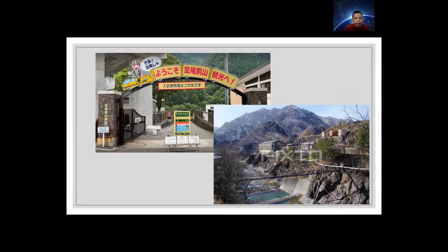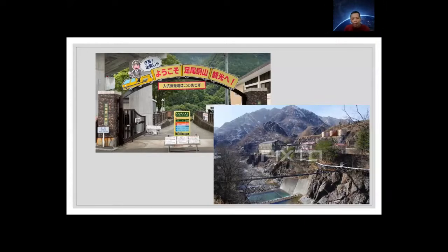The Ashio copper mine mineral pollution incident was a pollution incident in Japan originating from the early Meiji period in the late 19th century, in the Watarase River area of Tochigi and Gunma prefectures. It was noted that smoke due to the development of the copper mine polluted the air and water, and that other harmful substances brought significant changes in the surrounding environment and affected the statesman of Tochigi since 1890, leading to many problems.